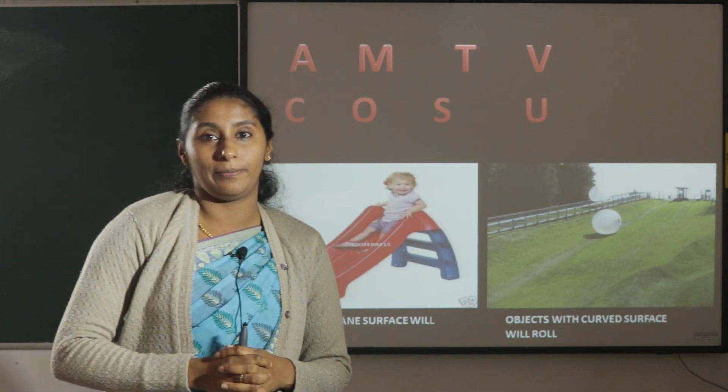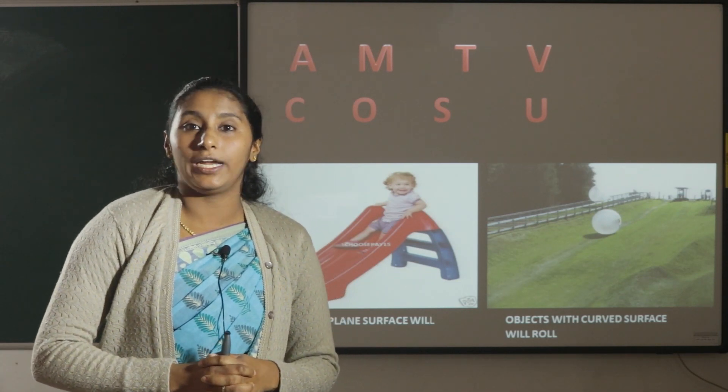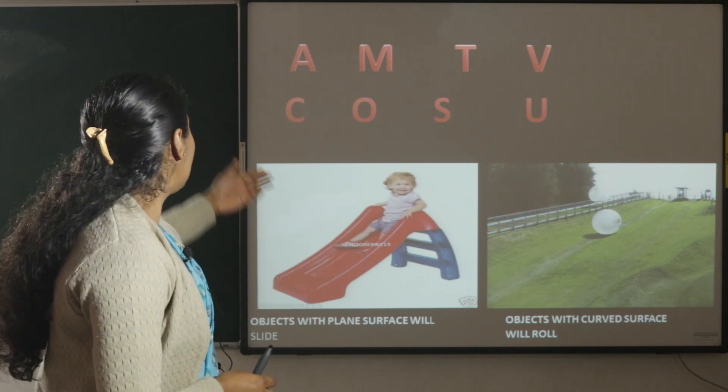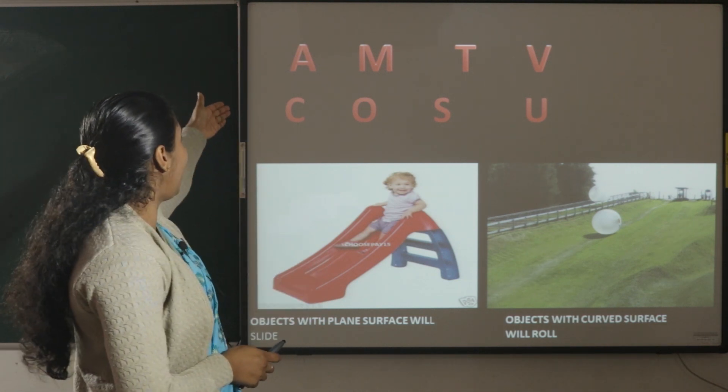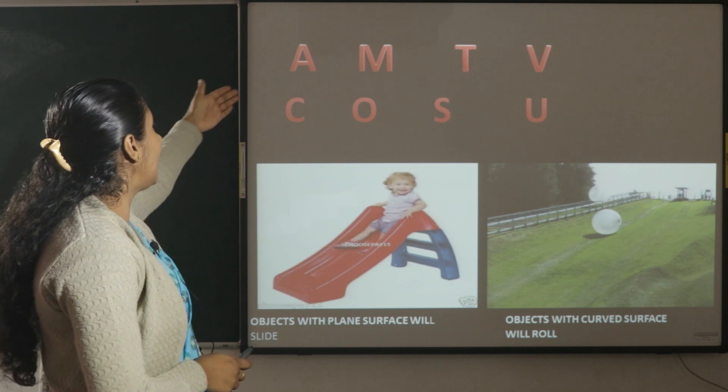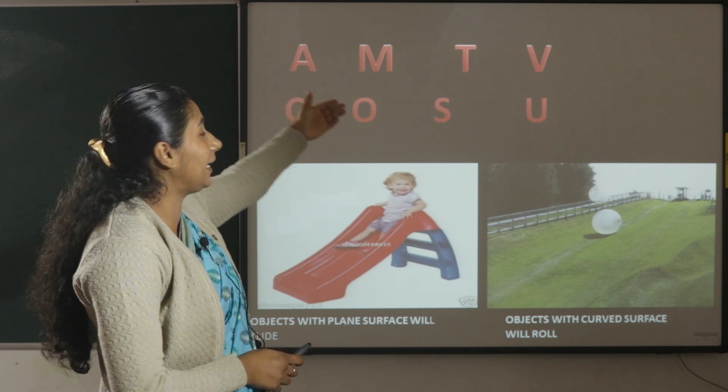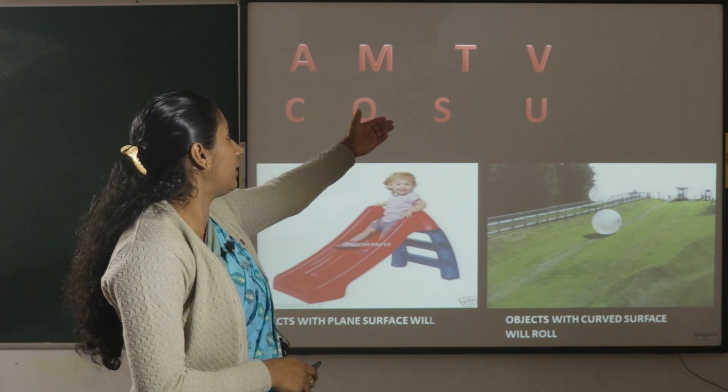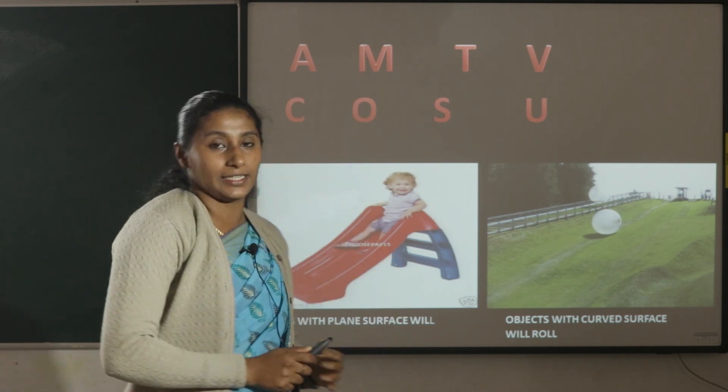In English alphabet, we use straight lines to write some capital letters. Here, for example, letter A has three straight lines, letter M has four straight lines, letter T has two straight lines, letter V has two straight lines.